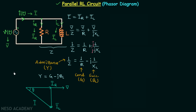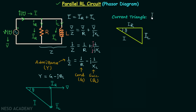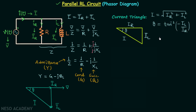For the current triangle, the base is IR, the perpendicular is IL, and the hypotenuse is I. The total current I equals the square root of IR squared plus IL squared. The power factor angle theta equals tan inverse of negative IL divided by IR. The power factor, cos theta, equals IR divided by I, and it will be lagging because we have an inductor.